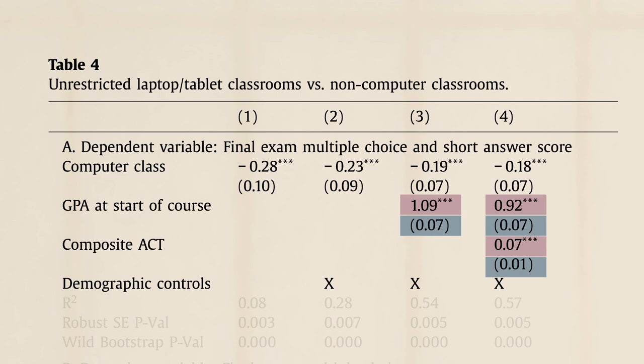GPA and ACT scores are also significant. Why is that? Good observation. That's not surprising. We expect these variables to predict college performance. Oh, right, of course. Kids who got better grades before are more likely to get a better grade in this course.